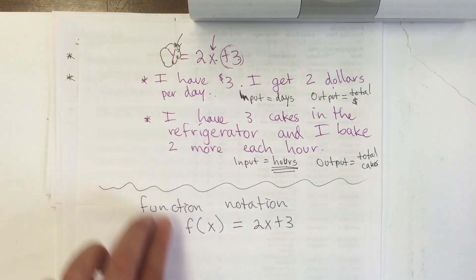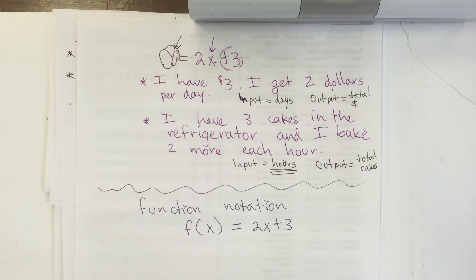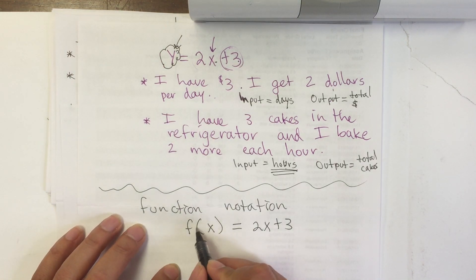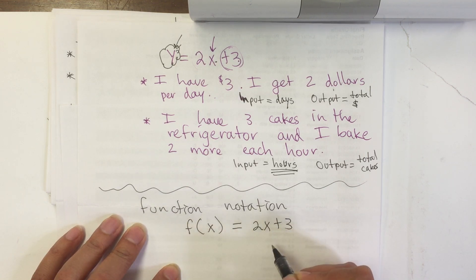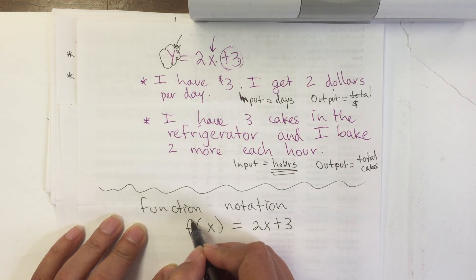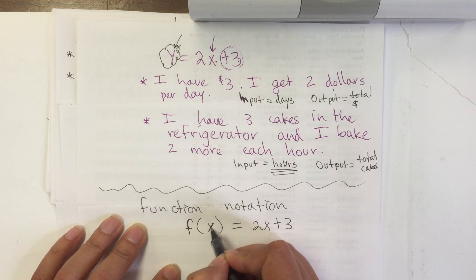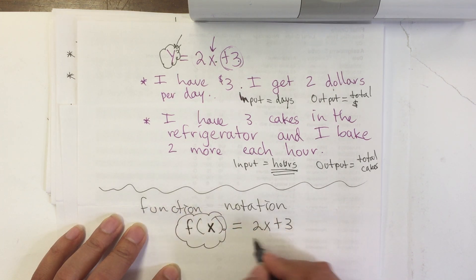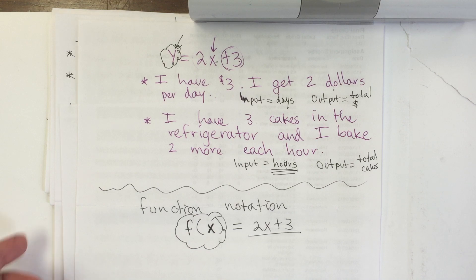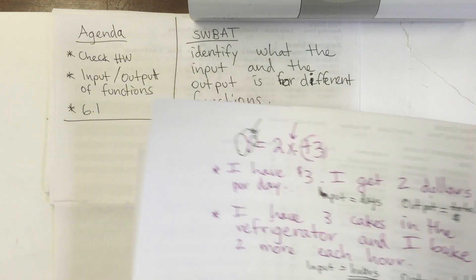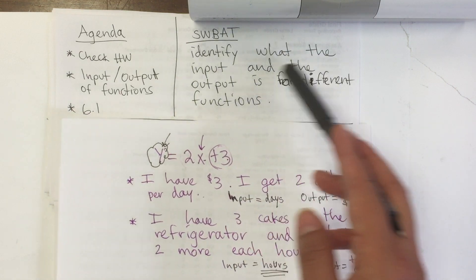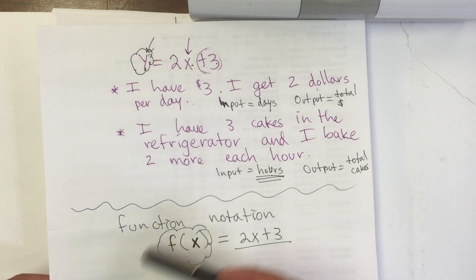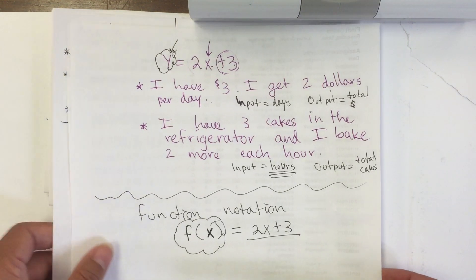f(x) = 2x + 3 is exactly the same as y = 2x + 3 — all we changed was the y with f(x). One thing: this does not mean multiplication. It just means the result of this — it's not multiplying f times a value. It's saying the result. Having that in mind, remember that the objective for today is just to identify the input and the output; later on we will be applying more of the function notation.